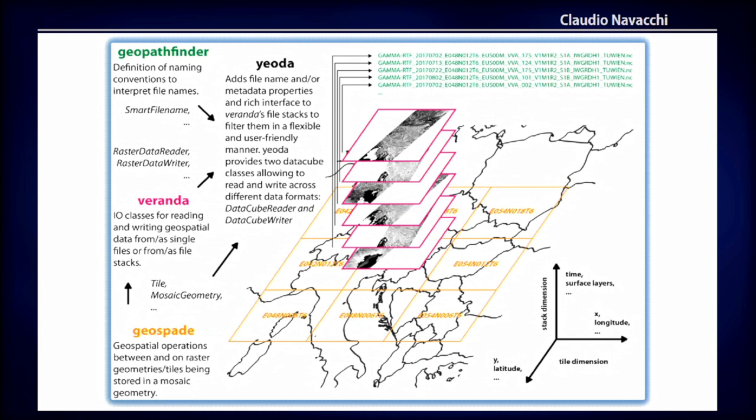So how does YODA actually work? YODA relies on several in-house developed software packages which wrap around the basic packages seen before. On the bottom we have Geospate, which defines some basic geometries and tiles and how they relate to each other. On top of Geospate, you have Veranda, which unites those abstract geometries with actual I/O classes to deal with all kinds of data formats.